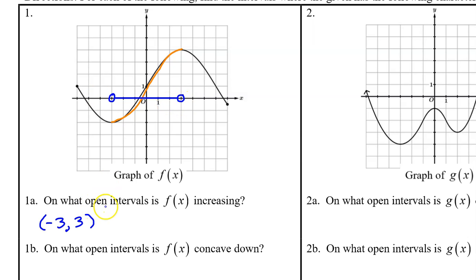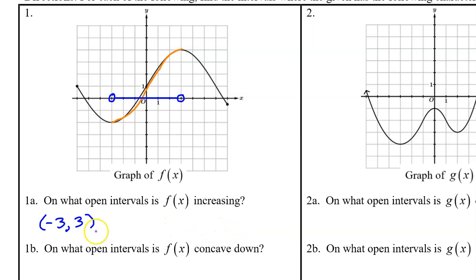When they say open intervals, they mean that the endpoints are not to be included. I have shown this with open circles on this line segment, and we also indicate this in interval notation by using parentheses, as opposed to brackets. Brackets mean that the endpoints are included, whereas parentheses mean they are not. We will always use open intervals for intervals of increasing and decreasing, and for intervals of concave up and concave down.